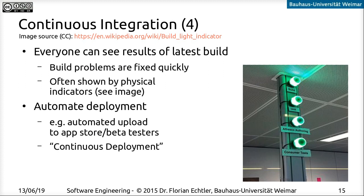Last but not least, CI also suggests that in addition to everything else that's already automated, you should also automate the actual deployment. Whenever a build is successful and has passed all the tests, it should immediately be supplied to the beta testers. This is sometimes called continuous deployment — basically every new commit will immediately end up in the hands of the beta testers so you can get immediate feedback on whether it introduced any new issues.